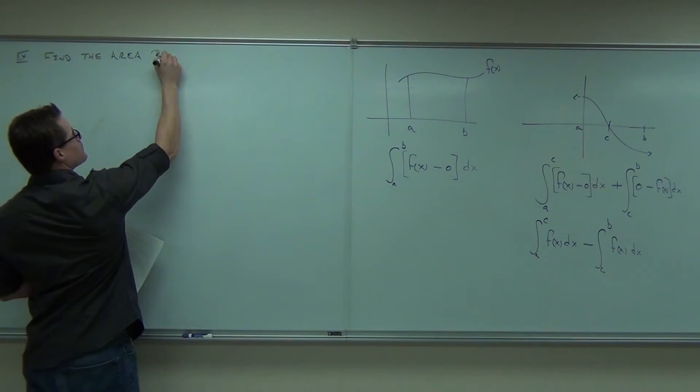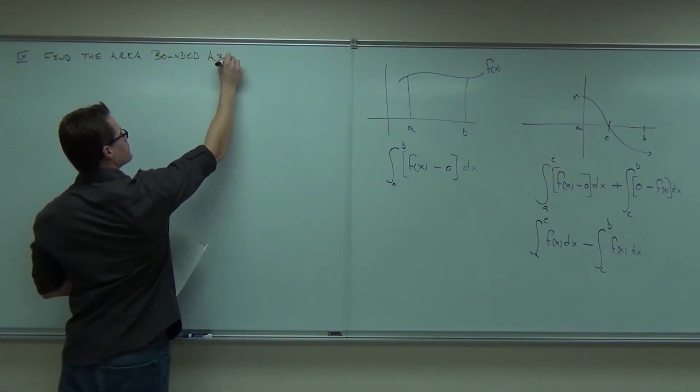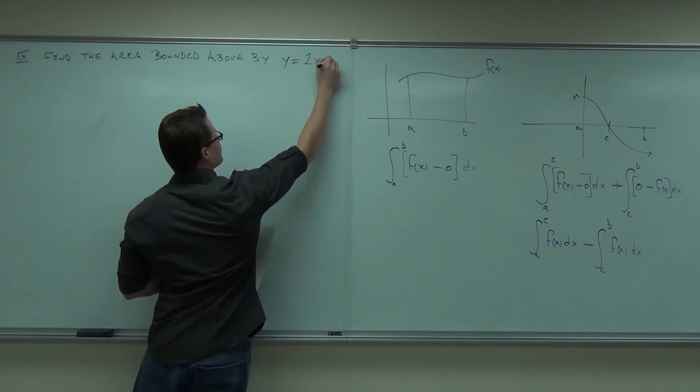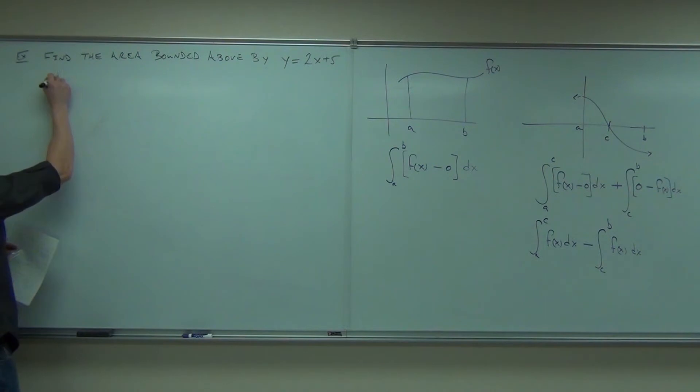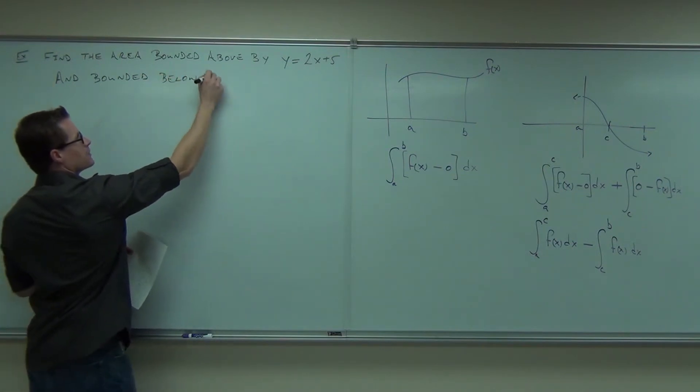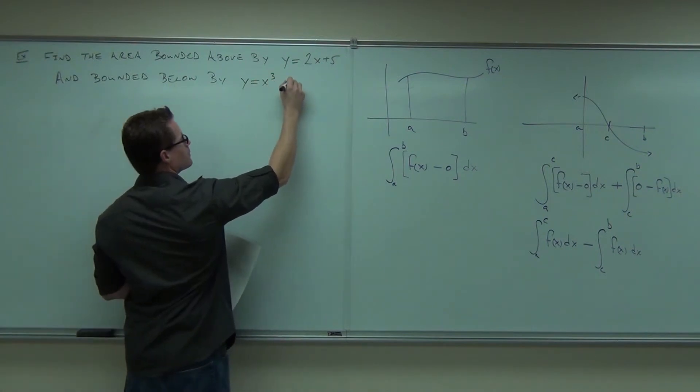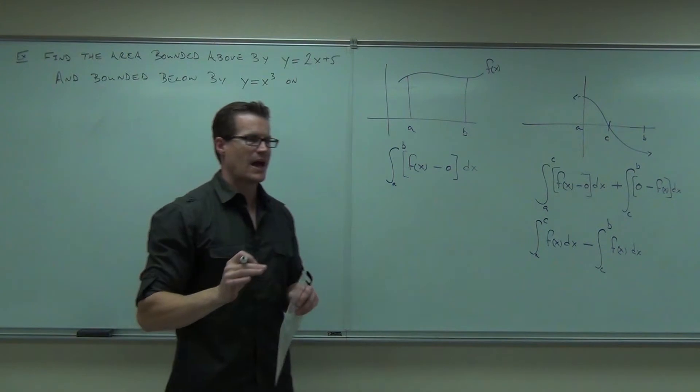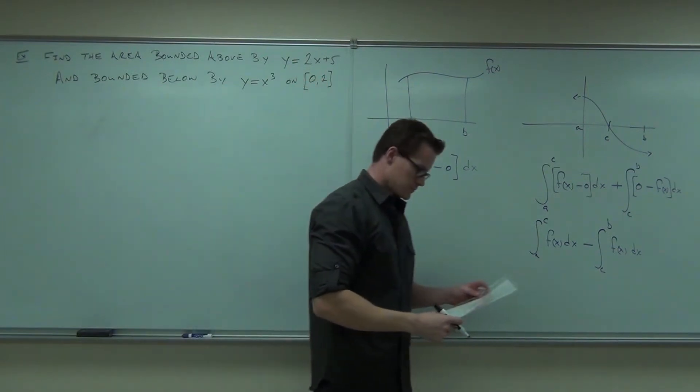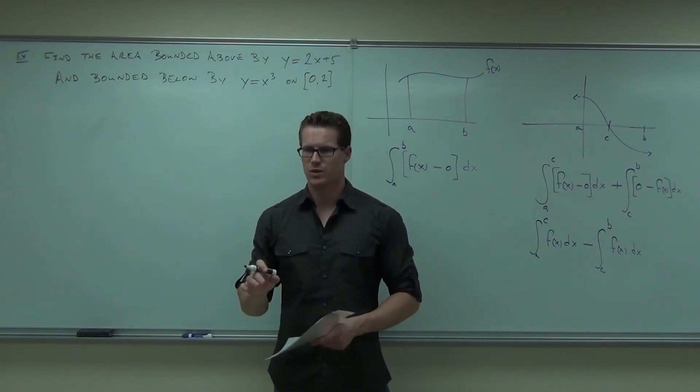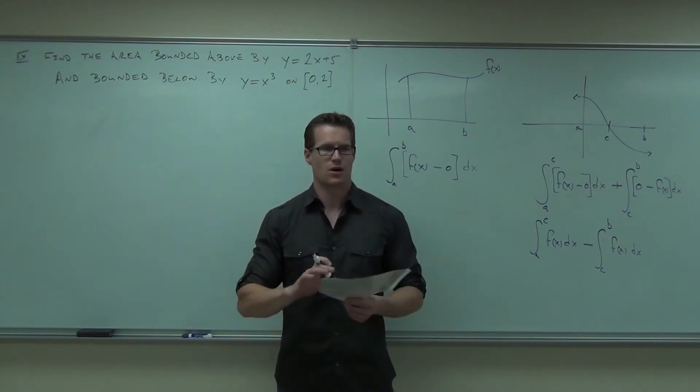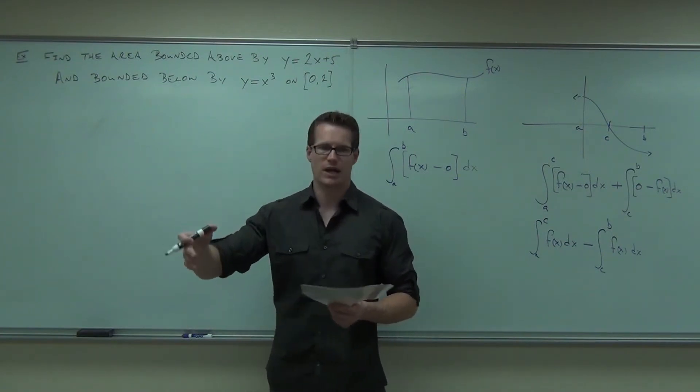So find the area bounded above by that function and bounded below by this function on a given interval. They've got to give you an interval, or you have to be able to find one on 0, 2. You know, sometimes for these, if they don't tell you what's bounded above or bounded below, it's nice to draw a picture, get the idea, see which one's above, which one's below. You don't have to, absolutely, because I'm going to give you a way to do this without having to draw a single picture. But sometimes it helps just to make sure you see it in your head.